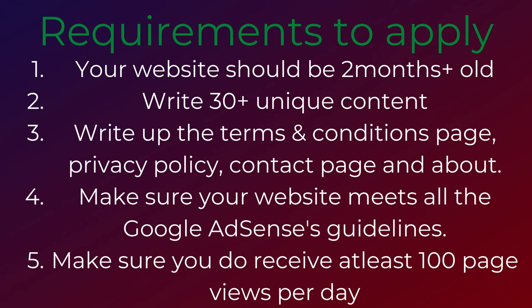Before applying, make sure that your website is two months old or more. You need to let Google know that you didn't just create your website to make money, but to share whatever you are writing. Second, you need to write 30 or more unique blog posts or articles on your website. Third, your website needs to be compliant — write up the Terms and Conditions page, Privacy Policy, Contact page, and About Us page. Fourth, make sure your website meets all Google AdSense's guidelines and ensure you receive at least 100 page views per day.